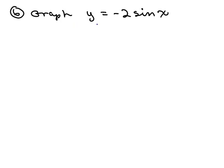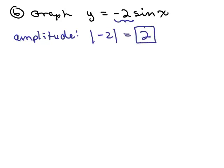Number 6, we're going to graph y equals negative 2 sine x, and we're asked to state the amplitude, period, phase shift, if any, and the vertical shift if any. So the amplitude is the absolute value of the coefficient of the function. So the amplitude is the absolute value of negative 2, which is 2. So that's the amplitude of the function.